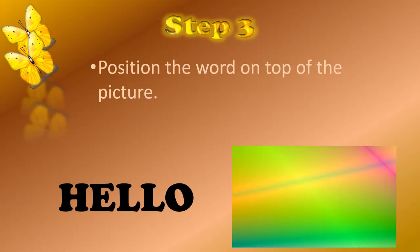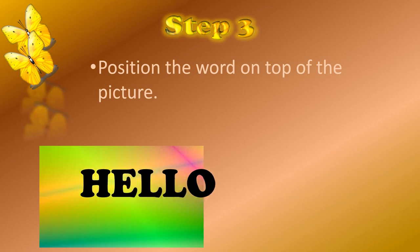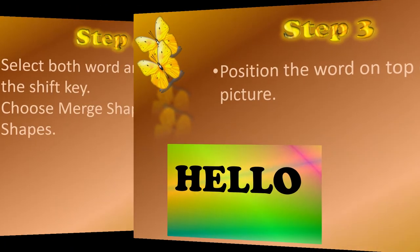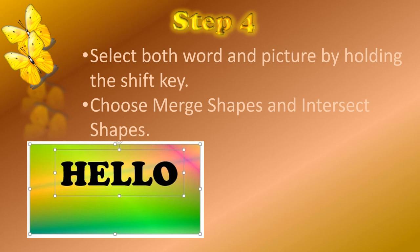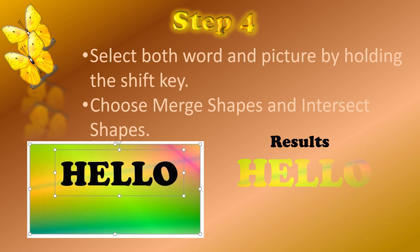Next, I'll position the word on top of the picture as shown. And finally, step four: select both the word and picture by holding the shift key, then choose merge shapes and the intersect shapes choice. The result will be, as you see below, the word Hello picking up the colors from the picture.